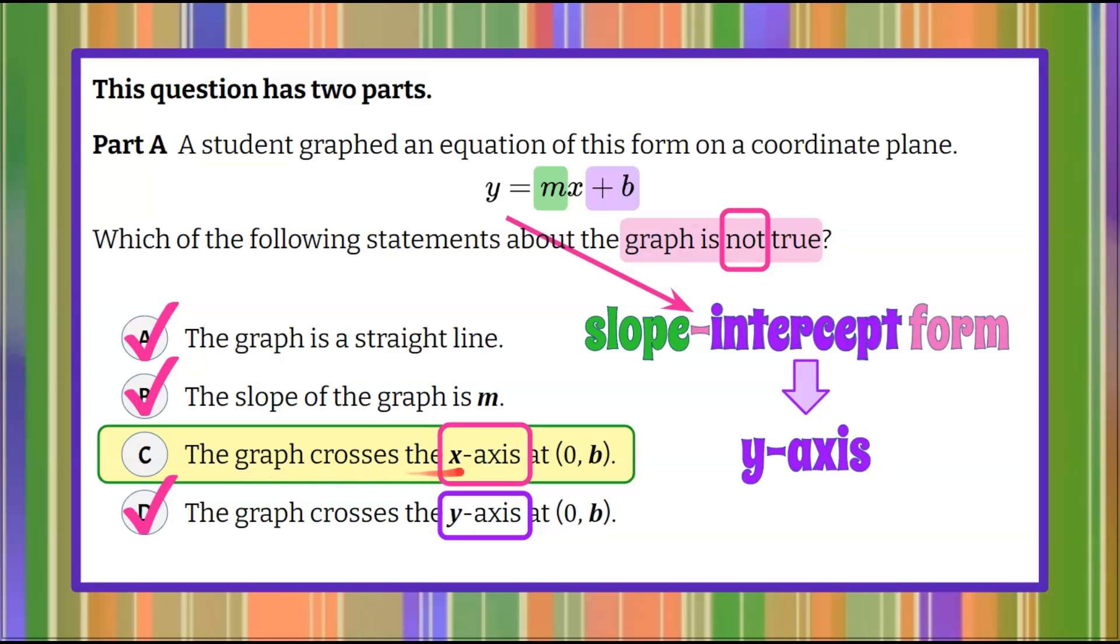So therefore answer choice C is the answer that is not true. The graph crosses the x-axis at 0B. That is incorrect. This is the y-intercept when written in slope-intercept form.